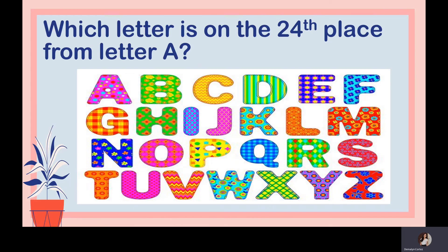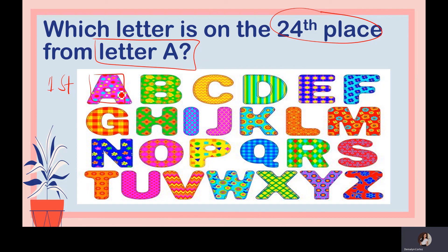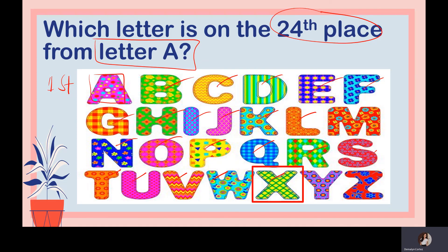Which letter is in the 24th place from letter A? The point of reference is letter A, which is the first. Count from A to the 24th place: A is 1, B is 2 ... counting up to 24 gives you the letter X. Another strategy: there are 26 letters in the alphabet, so 26 minus 24 equals 2 — take two letters from the end and you get X. There are many strategies in math, as long as you arrive at the same answer.